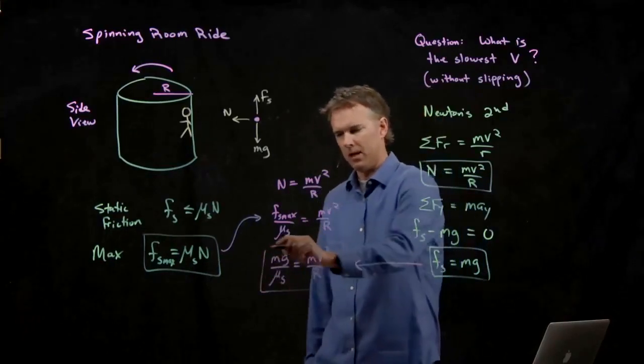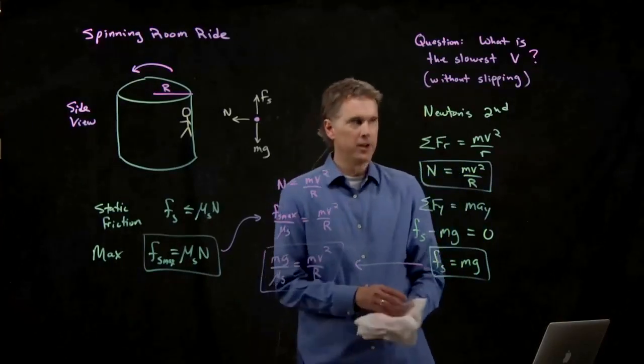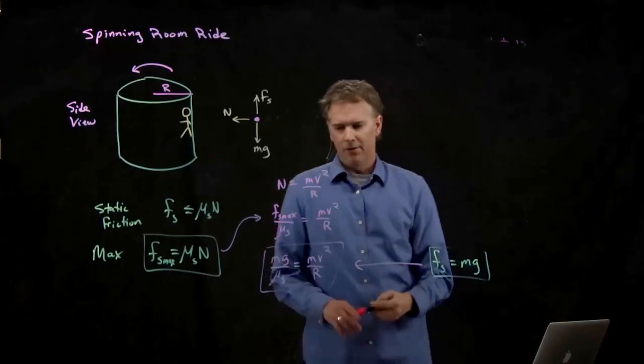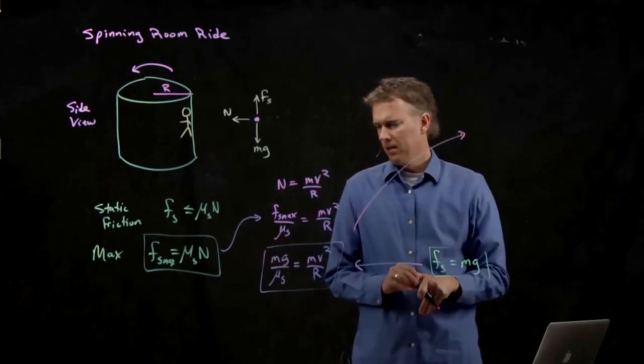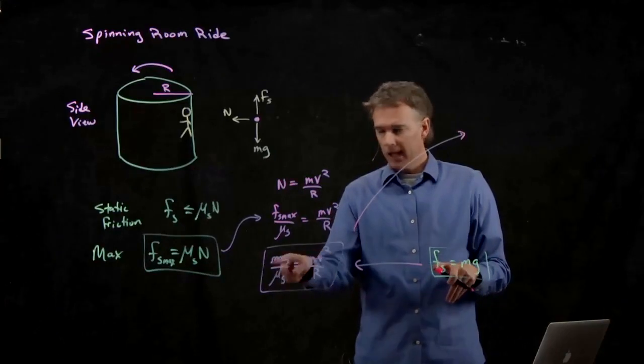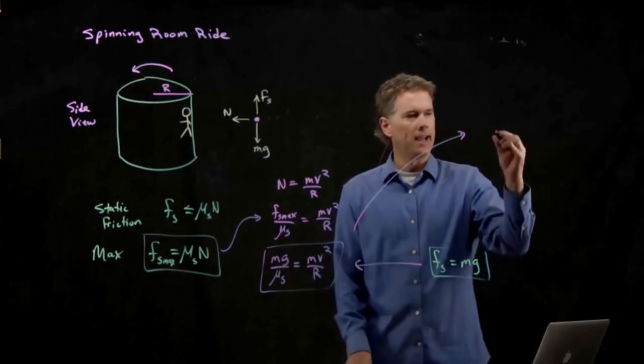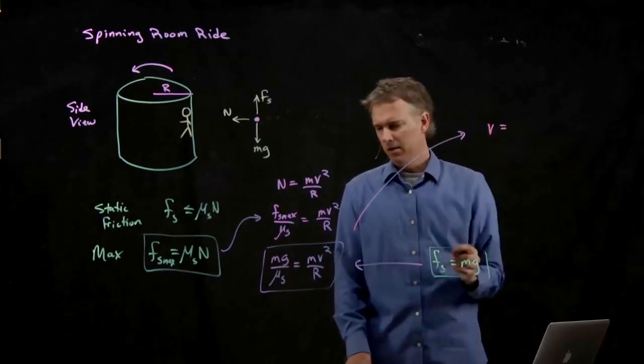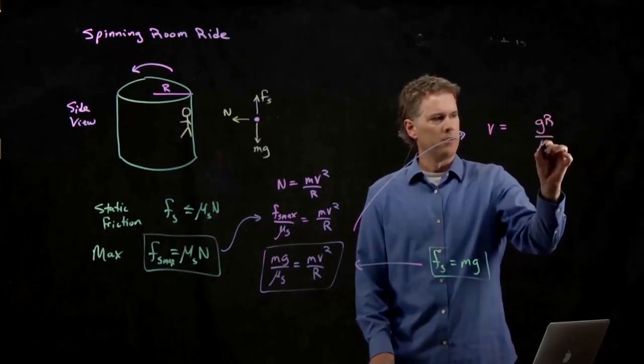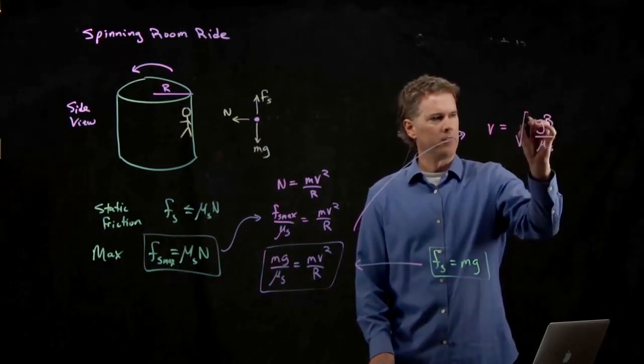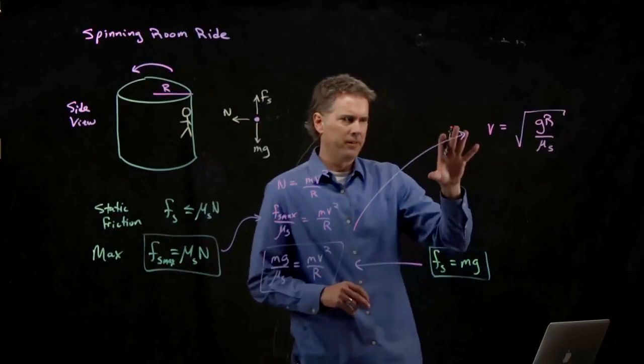All right, hopefully that was kind of clear. But if not, you can review the videotape. All right. And so now we can solve this for V. So if we're going to solve this for V, look what happens. The M cancels out on both sides. And if I multiply across by R, I get V is equal to G times R divided by mu S. And then I have to take the square root.